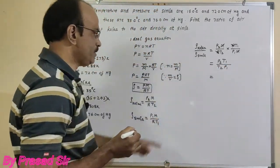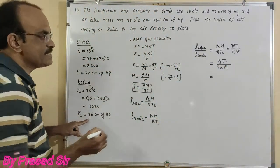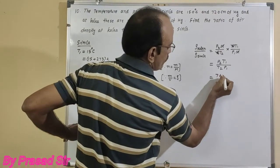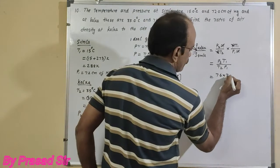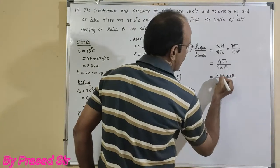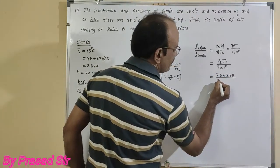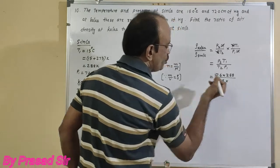So P2 equals 76, T1 equals 288, divided by T2 which is 308, times P1 which is 72.